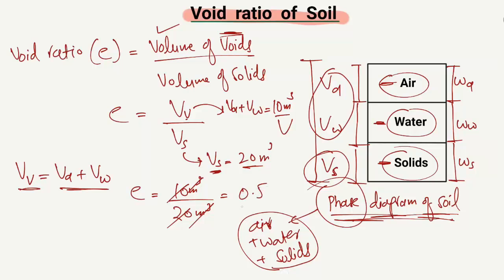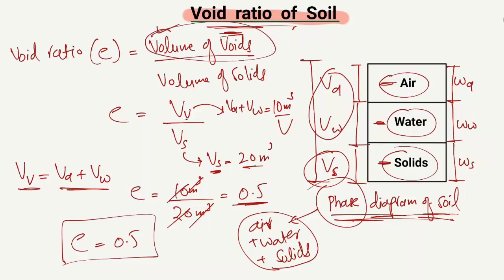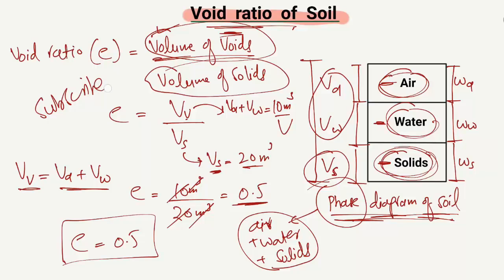If we divide this, cubic meter cancels cubic meter, so it will become 0.5. The void ratio does not have any units, so it is unitless. The void ratio of the soil sample is 0.5. In this way you can find the void ratio of the soil sample by knowing the volume of voids — the volume of air and water — and dividing by the volume of solids. Hope you understand, and don't forget to subscribe to our channel for Seven Engineering videos. Thank you for watching.